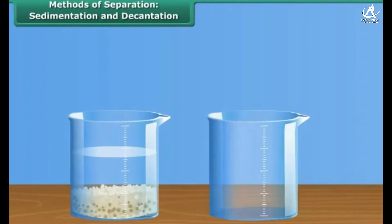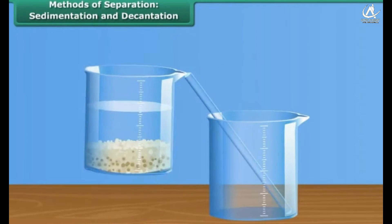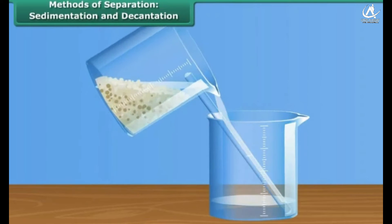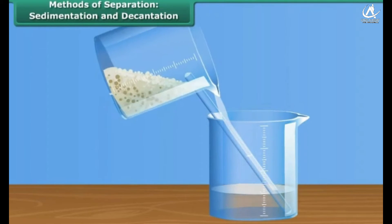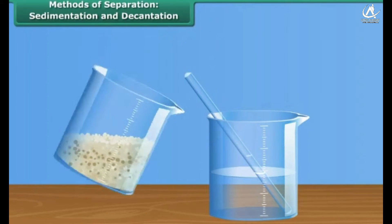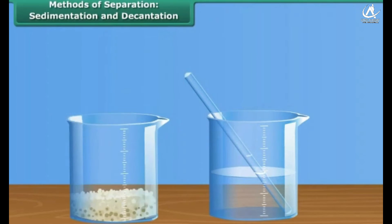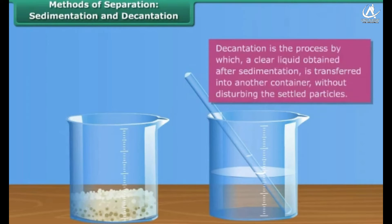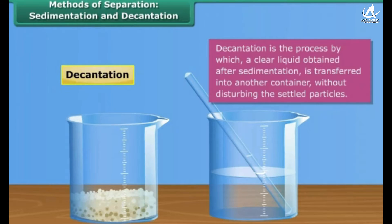Jack separated the upper layer of water from the mixture by gently pouring the clear water into another beaker without disturbing the sediment. This process of separation of a liquid from the sediment is called decantation. Similarly, there are other separation methods too. Let us discover them in this module.